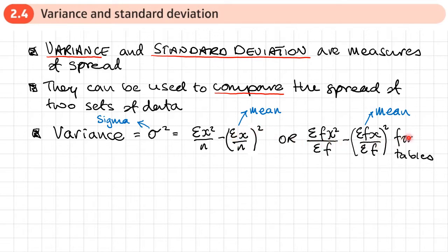If we're using a frequency table, then we add in F where we didn't have it before. So the sum of the frequency times the data squared over the sum of the frequency, minus the mean squared. Some people use this phrase to help remember it: the mean of the squares minus the square of the mean.